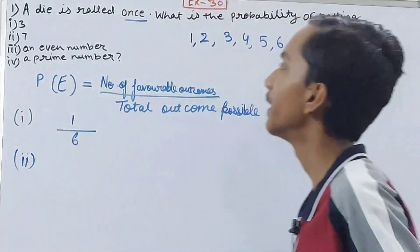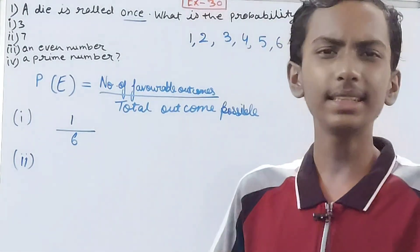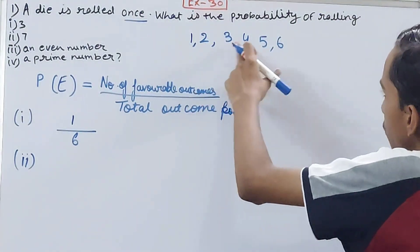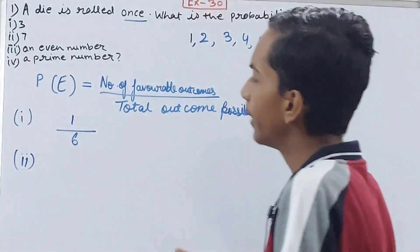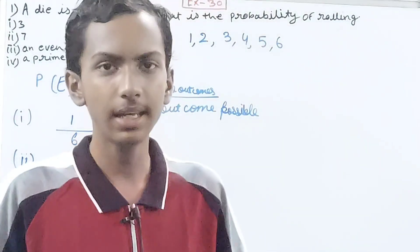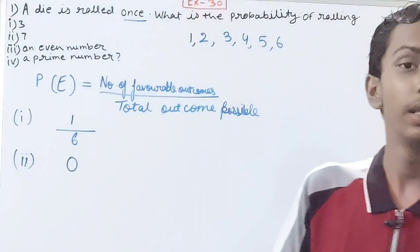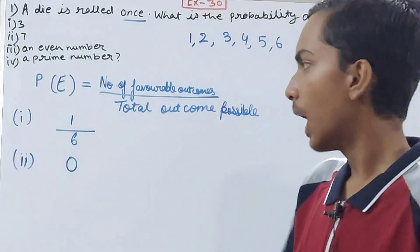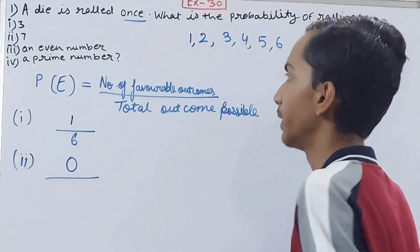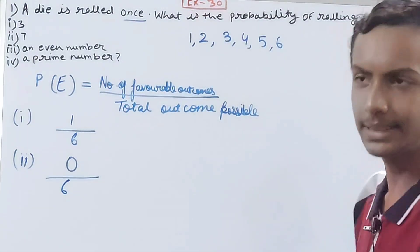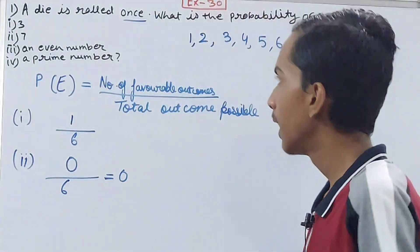Second part: what is the probability of getting a seven? See carefully — on the die we have one, two, three, four, five, and six. Seven is not written anywhere on the die, so there is no possibility of getting a seven. Favorable outcomes = 0, total outcomes = 6. So the probability is 0/6, which equals zero.